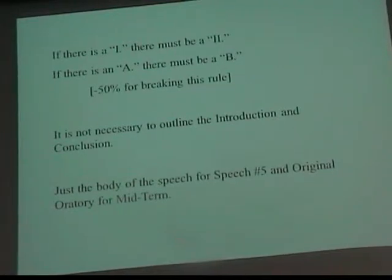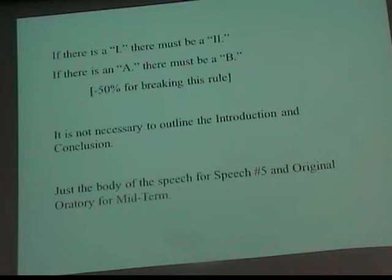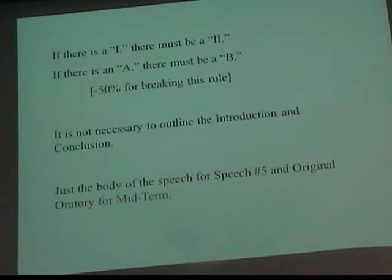Basic outline rules that I hope your English teacher has already covered. If there's a Roman numeral one, there has to be a Roman numeral two. There might be a Roman numeral three or four — as many points as you need. If you subdivide the Roman numerals, you get to capital letters. If you have a capital A, there must be a capital B. If you ever have a one without a two, or an A without a B, you have divided something into one, and you can't do that — you'll lose 50%.